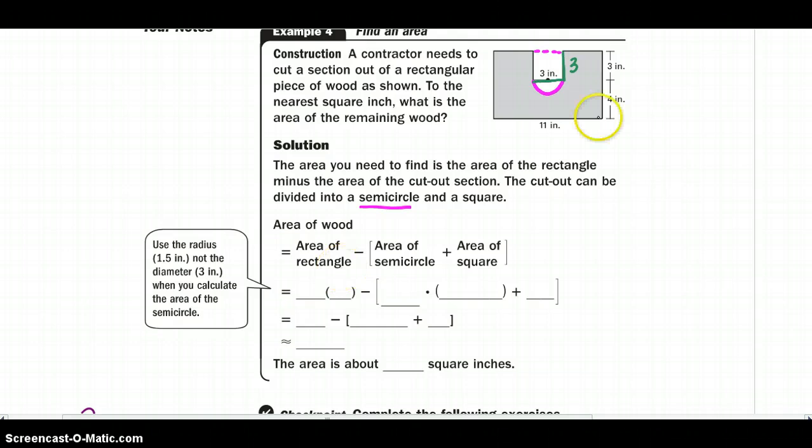So the area of a rectangle we can easily find by base times height, right? So I would say 11 times 7, which would give me 77. And I'm going to subtract the area of my semi-circle.